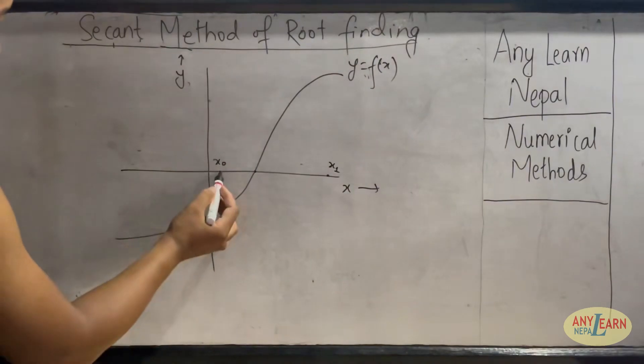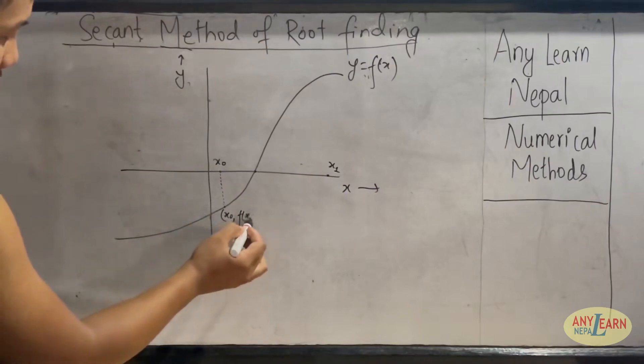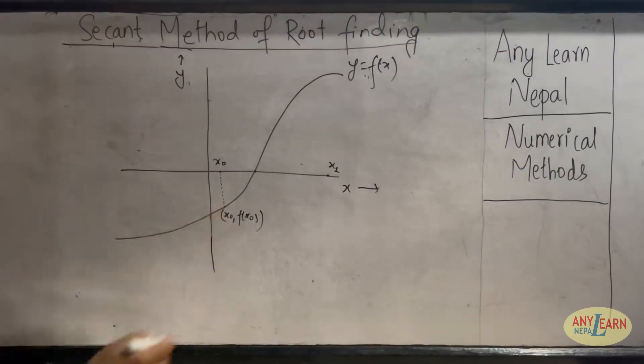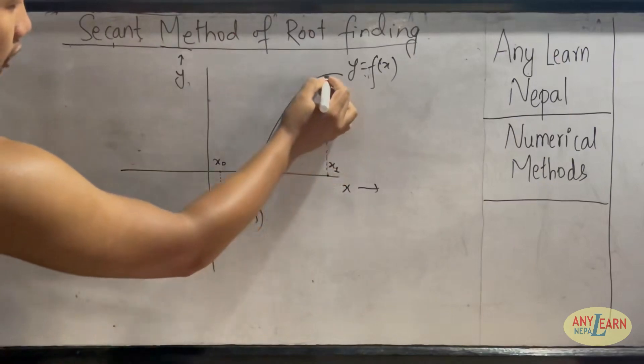So first of all, let's find the corresponding point on the curve. So this point will be (x0, f(x0)), that is the point on the curve, and from this point x1, let's find the corresponding point on the curve.